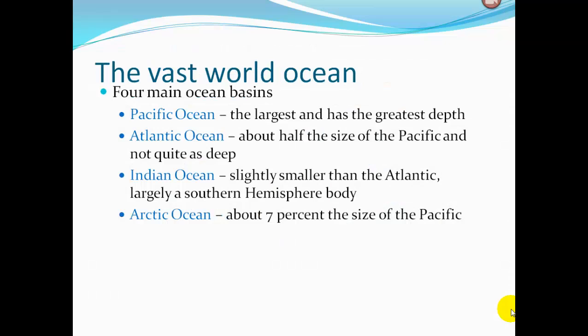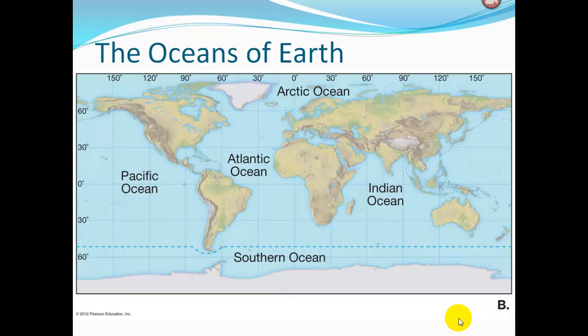There are four main ocean basins. The Pacific Ocean is the largest and has the greatest depth. The Atlantic Ocean is about half the size of the Pacific and not quite as deep. The Indian Ocean is slightly smaller than the Atlantic and is largely in the southern hemisphere. The Arctic Ocean is about 7% of the size of the Pacific.